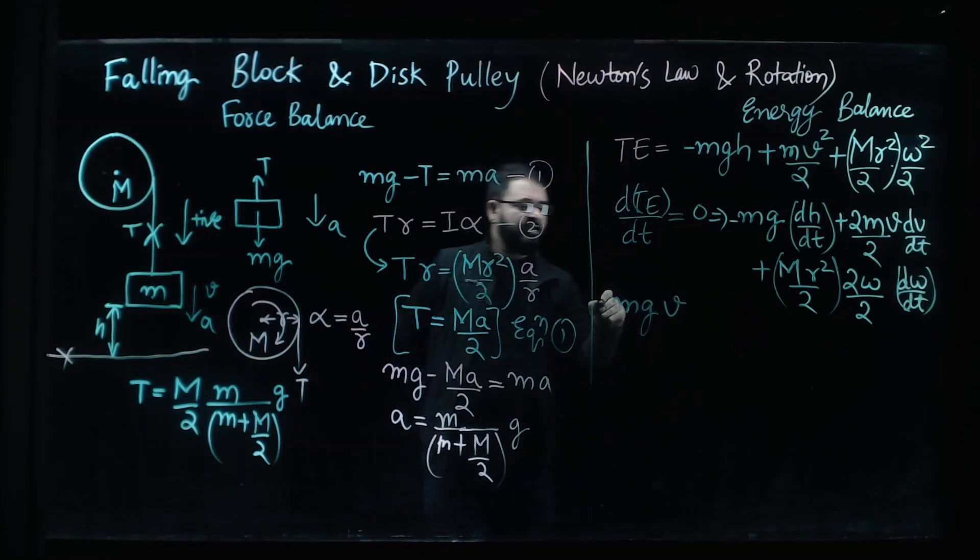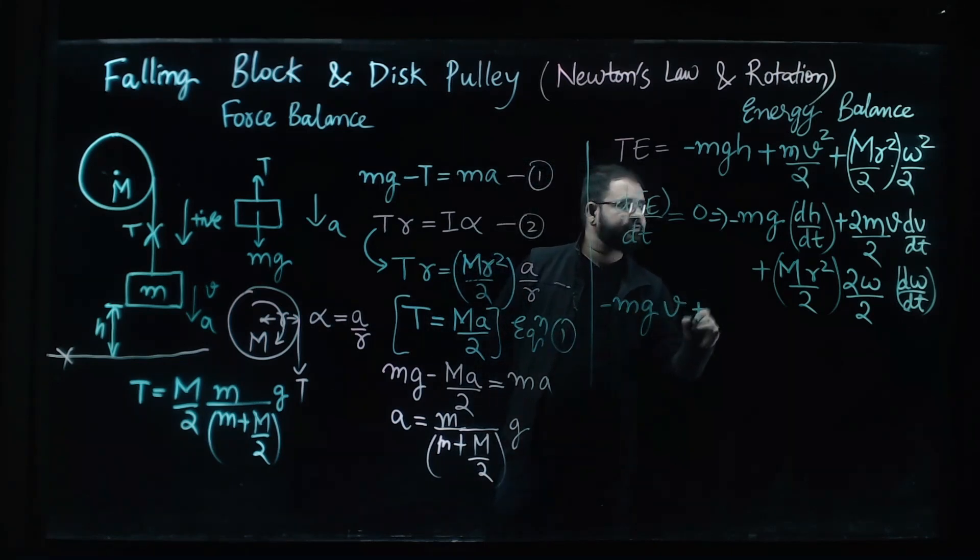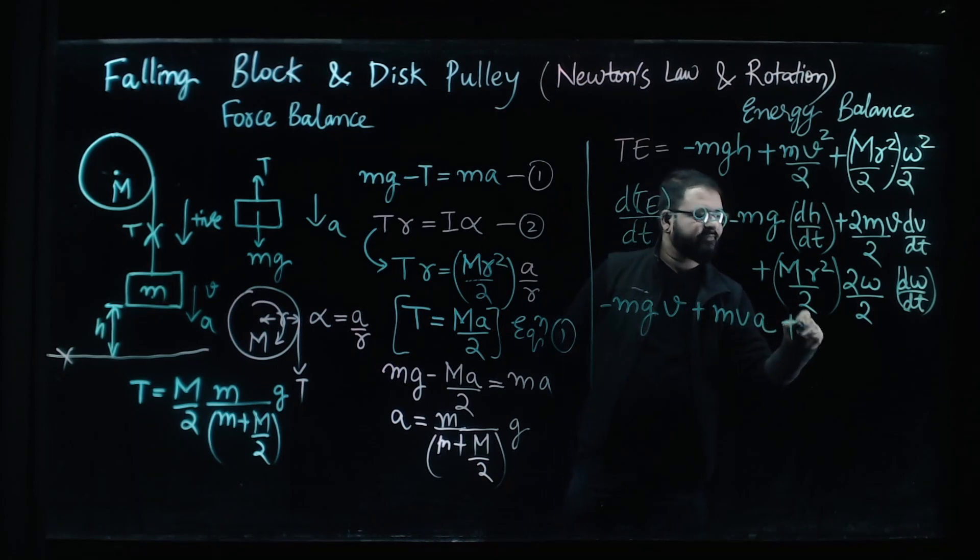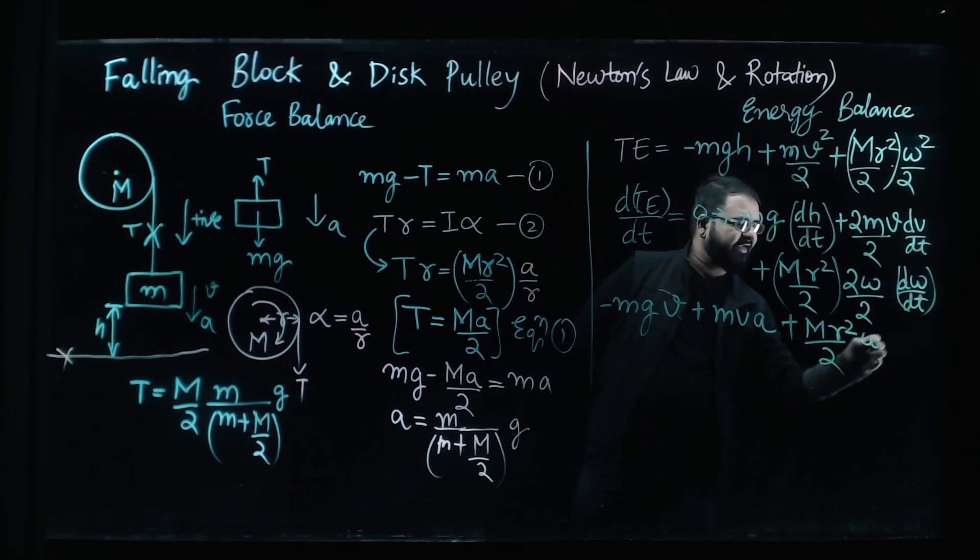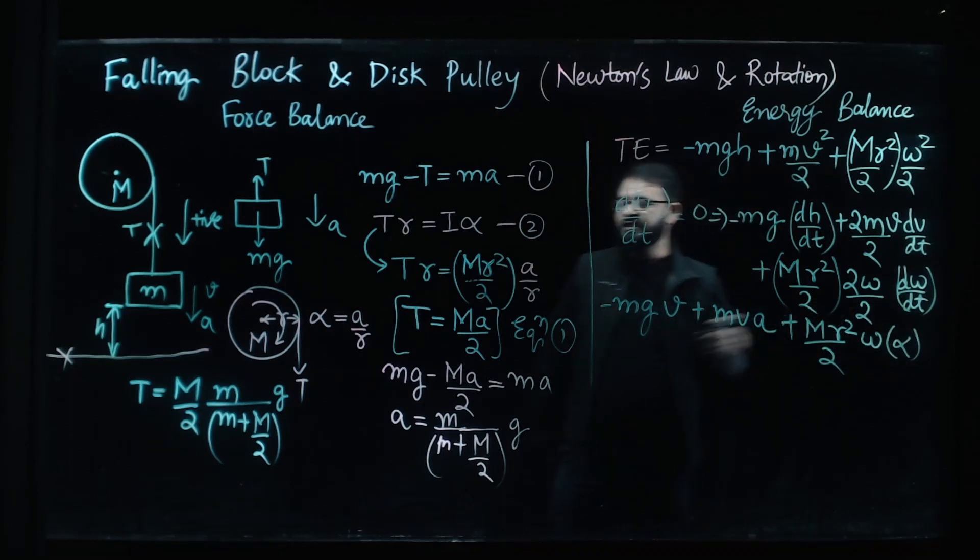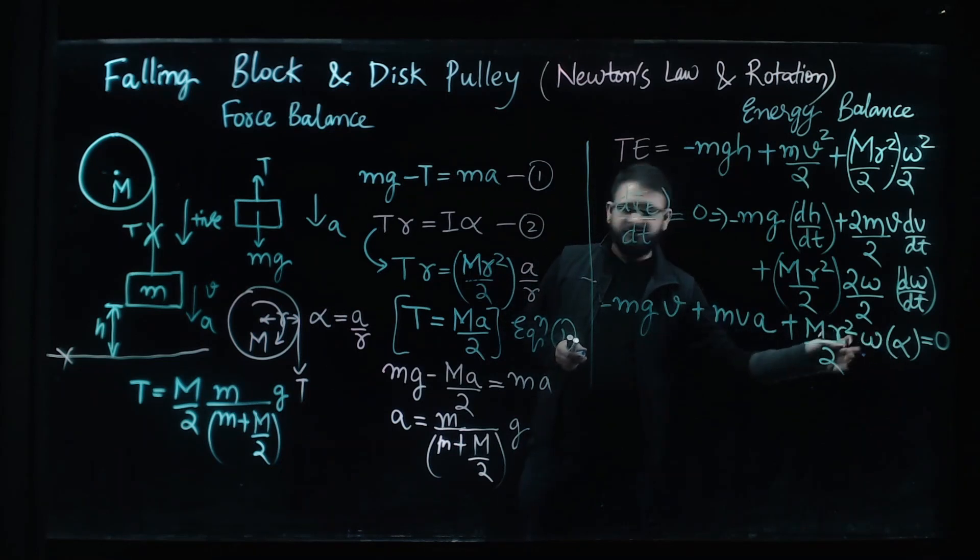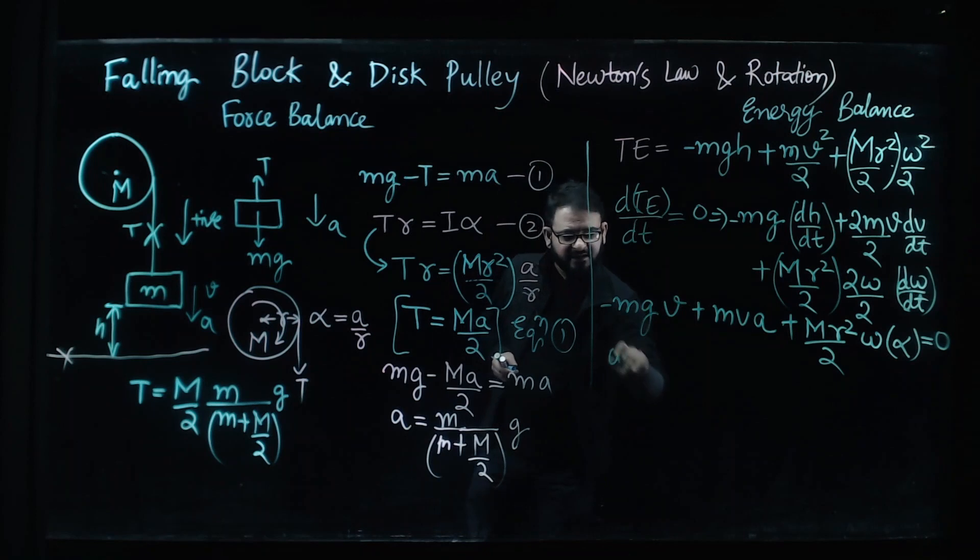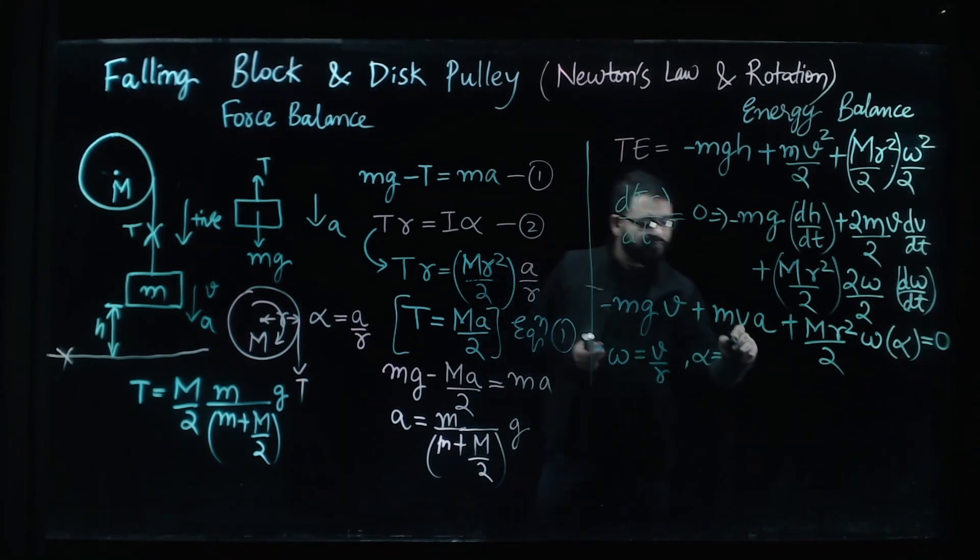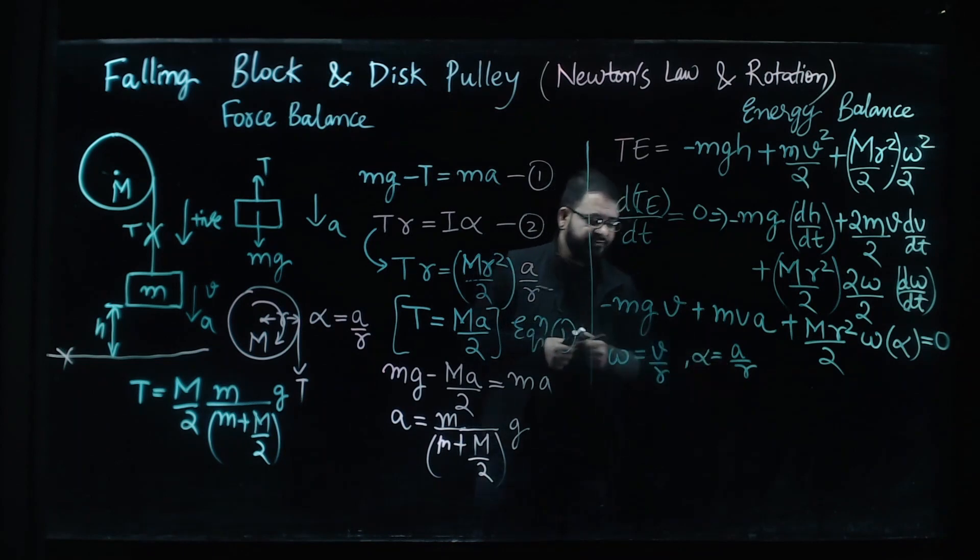Plus and we now dv by dt is a, plus now this term we can write mr square by 2 omega times this is alpha, alpha is rate of change of angular velocity. Now let's use the expression for omega is equal to v upon r and alpha is equal to a upon r. If we introduce these values what do we get.